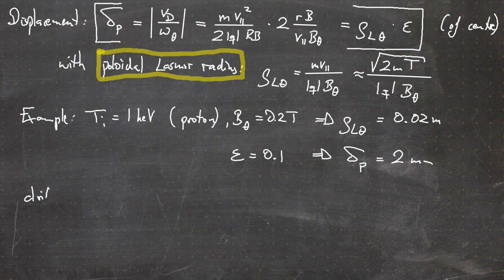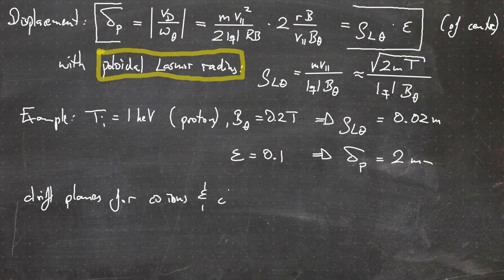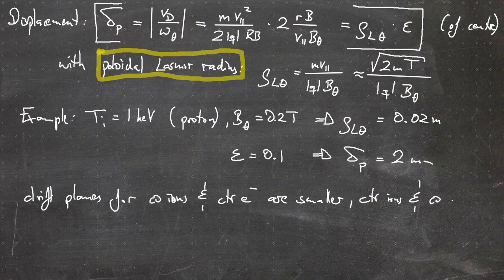In general, as a final statement: the drift planes for co-moving ions and counter-moving electrons are smaller than the flux surface they started on. For counter-moving ions and co-moving electrons, the drift planes are larger.